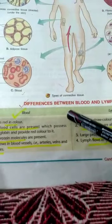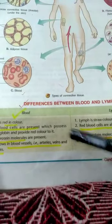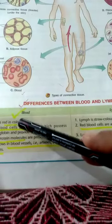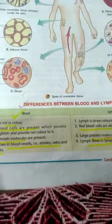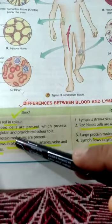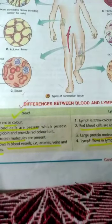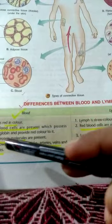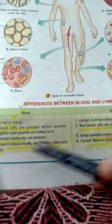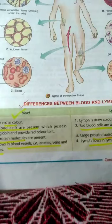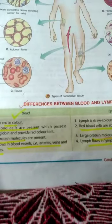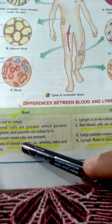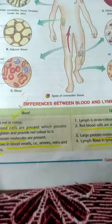Blood is red in color whereas lymph is colorless. Red blood cells are present in blood whereas lymph does not have red blood cells. Blood has large protein molecules whereas lymph does not. Blood flows in blood vessels whereas lymph flows in lymph vessels.